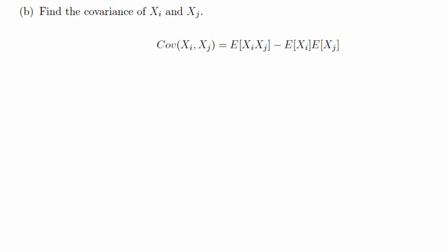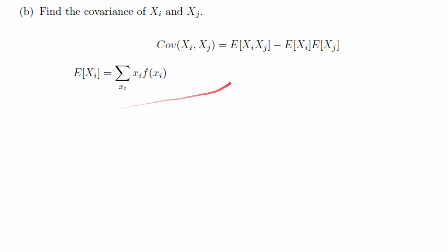Okay, next part of the question: let's find the covariance of x_i and x_j. Covariance is defined to be the expected value of the product x_i times x_j, minus the product of the expected values of x_i and x_j. We're going to find each of these three terms so that we can compute the covariance.